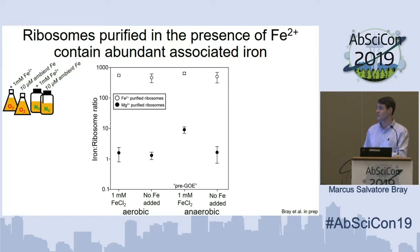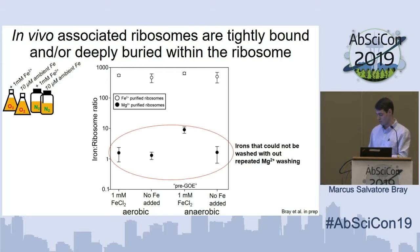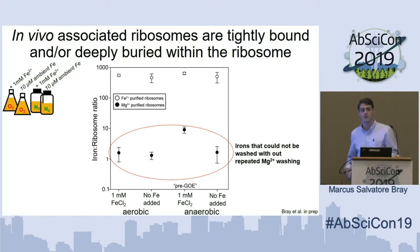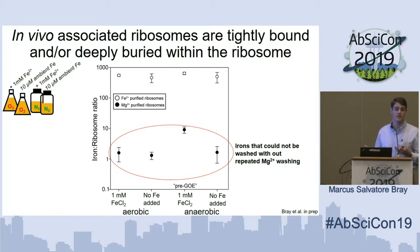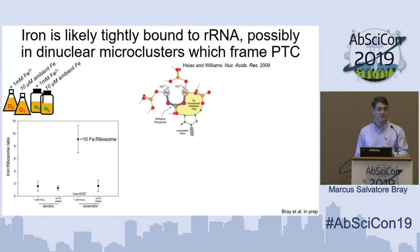That tells us there's a huge capacity, at least in vitro, for the ribosome to associate extensively with ferrous iron molecules. It also tells us something really interesting about the irons that are left over after purification with magnesium — these are irons we couldn't wash out, suggesting they are very tightly associated with the ribosomal RNA and/or deeply buried within the ribosome structure. The fact that we're seeing around 10 possibly hints at the exact mechanism of association with the ribosome.